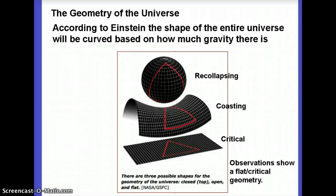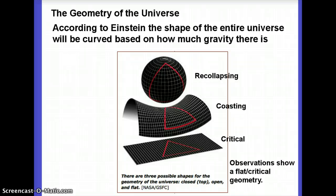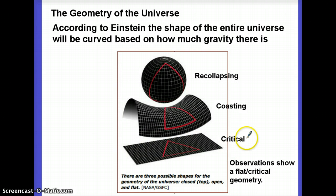If you think about the geometry you learned in ninth or tenth grade, what you learned was what we would call flat geometry, or Euclidean geometry. Euclidean is named for Euclid — he's the guy who came up with all the rules. There were a bunch of theorems you learned; for instance, you learned that the angles of a triangle add up to 180 degrees. In a flat triangle, clearly the angles would add up to 180.